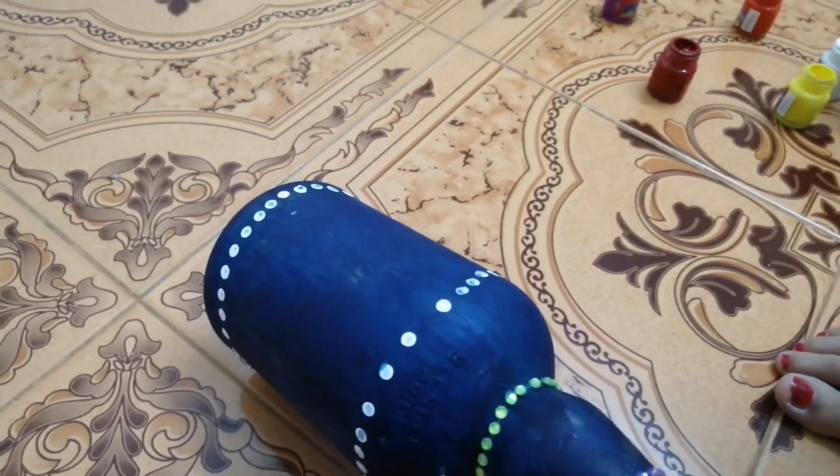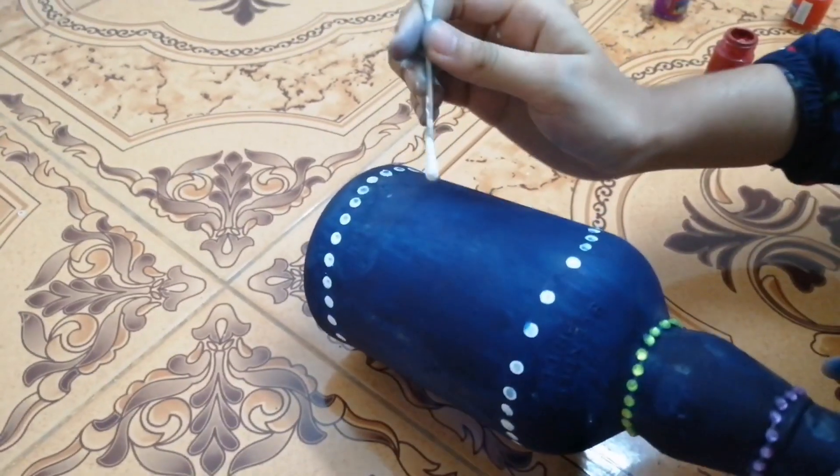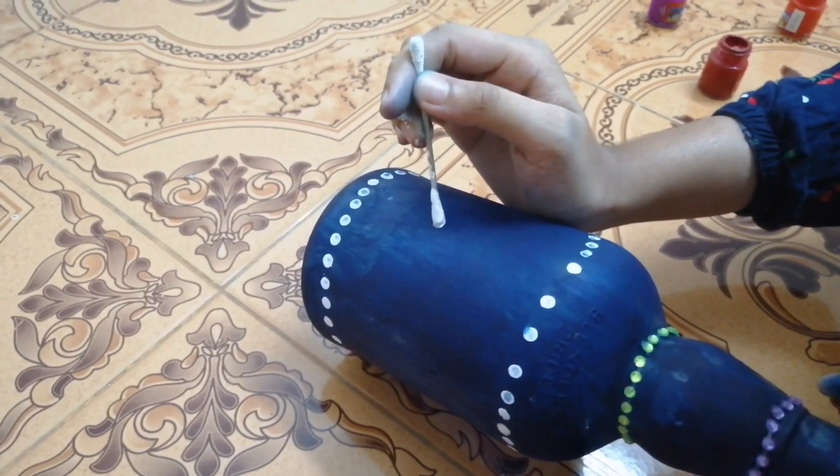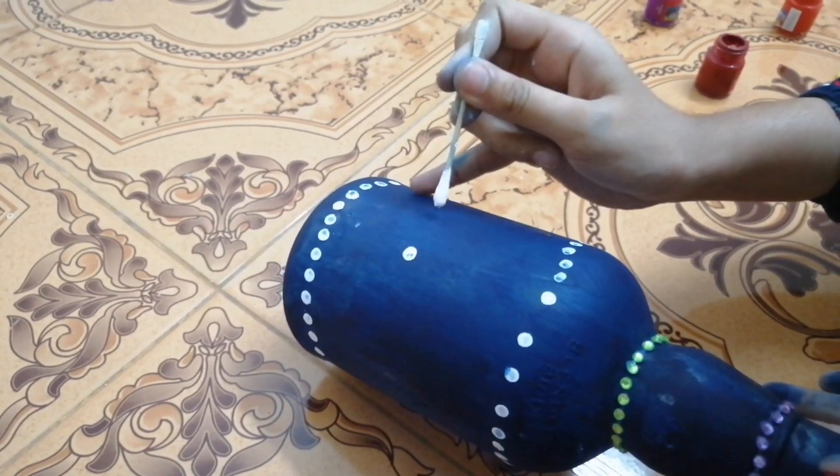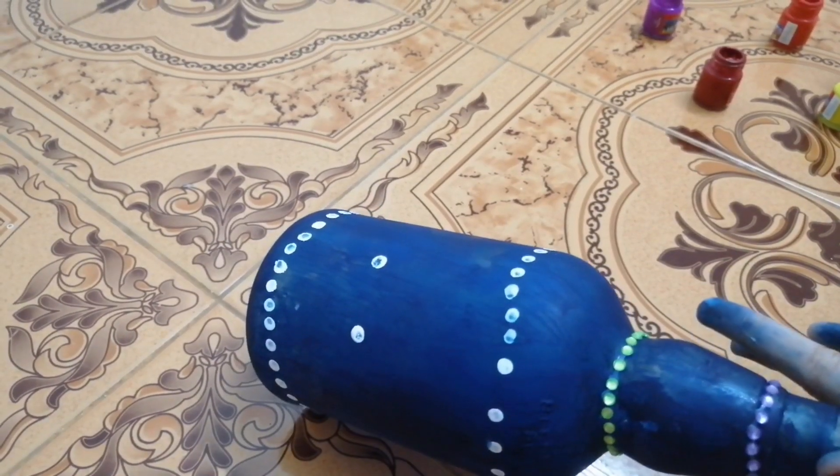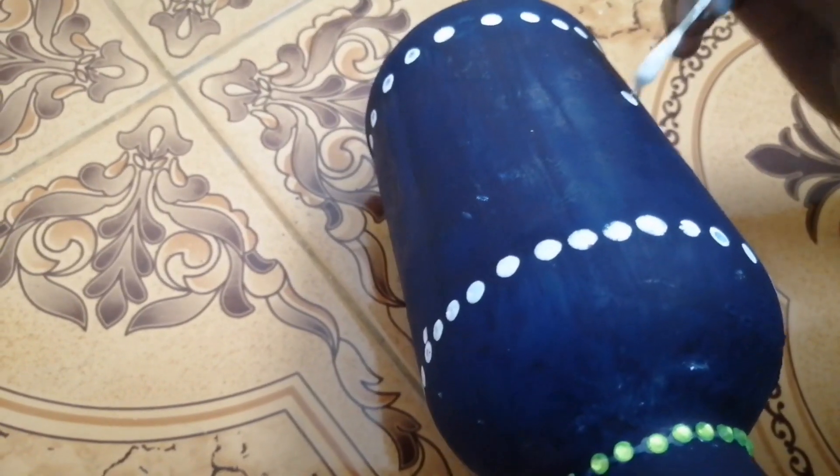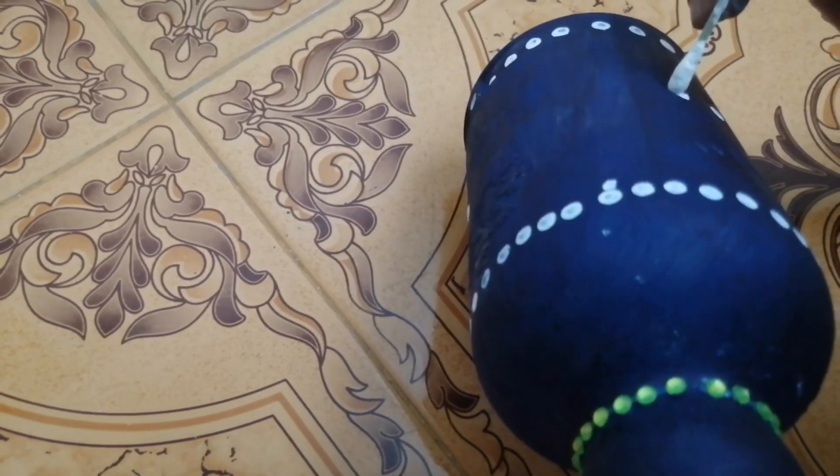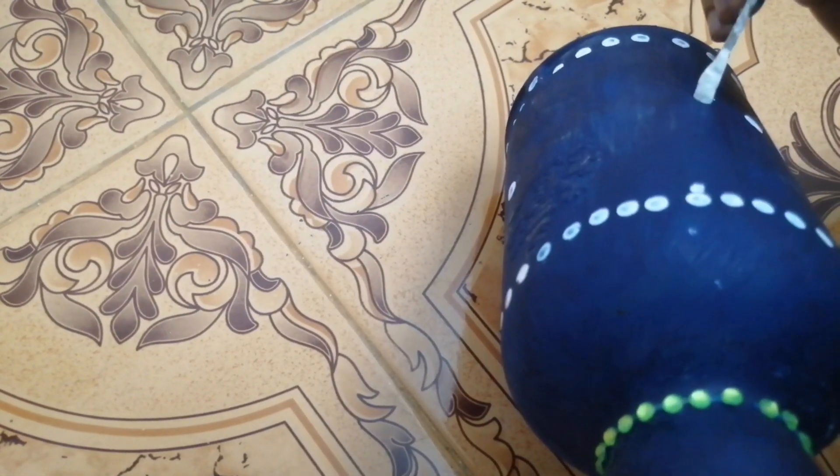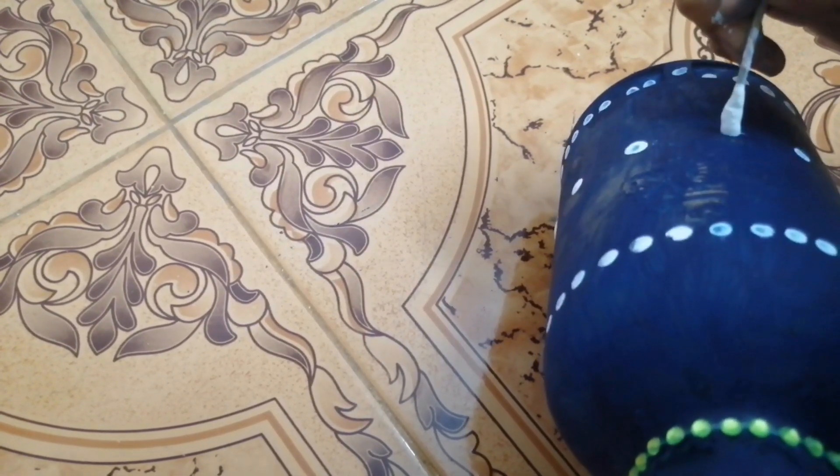Next step I am going to dip the ear bud in white paint and make dots. We have to leave space. Now we got like this.